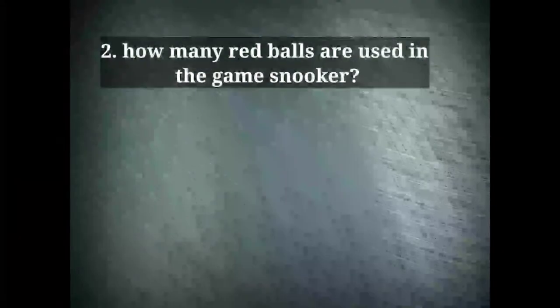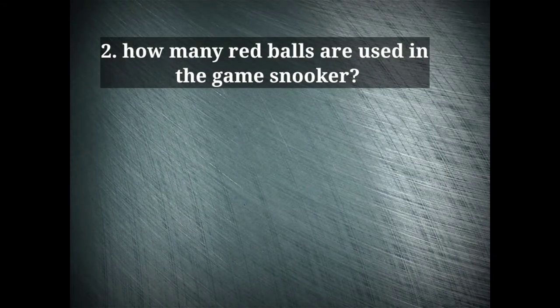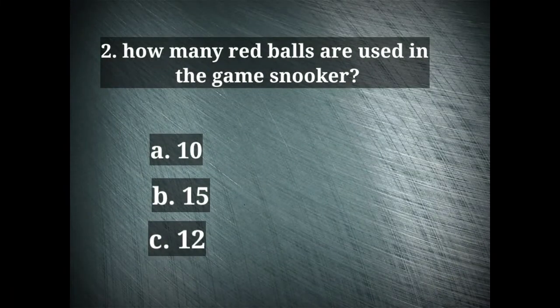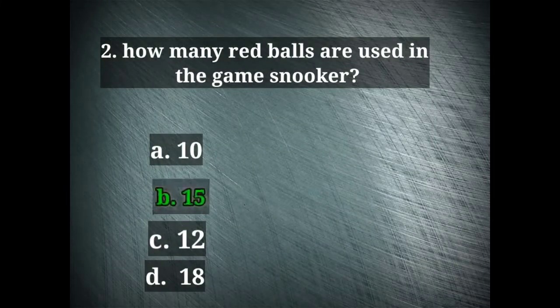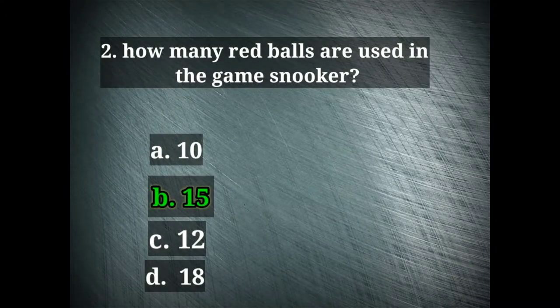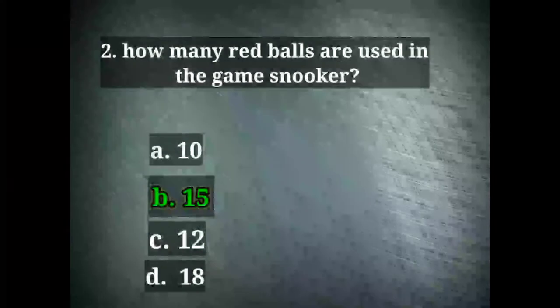The next question is: How many red balls are used in the game snooker? The options are 10, 15, 12 and 18. The right option here is 15. The game is played with 22 balls, out of which 15 balls are red.